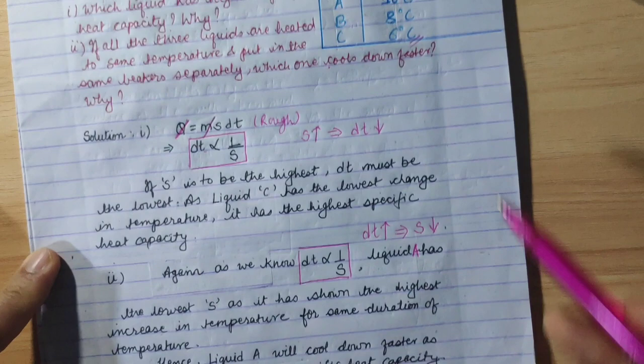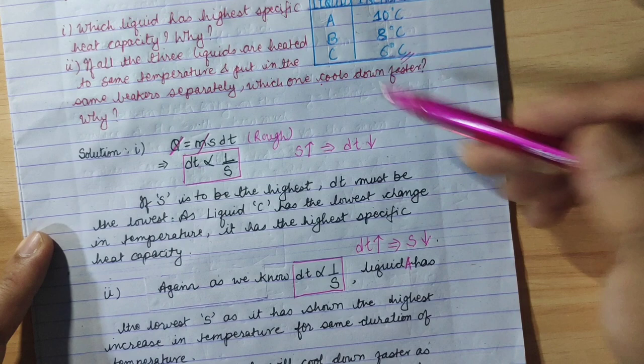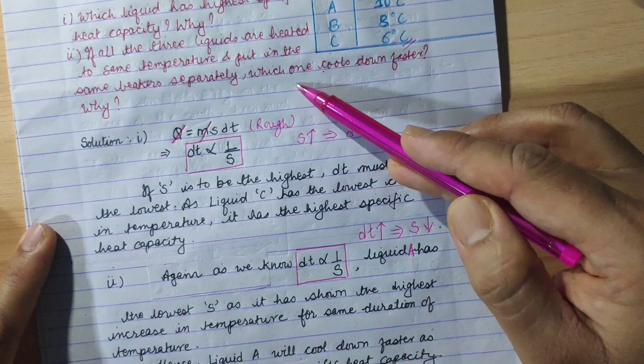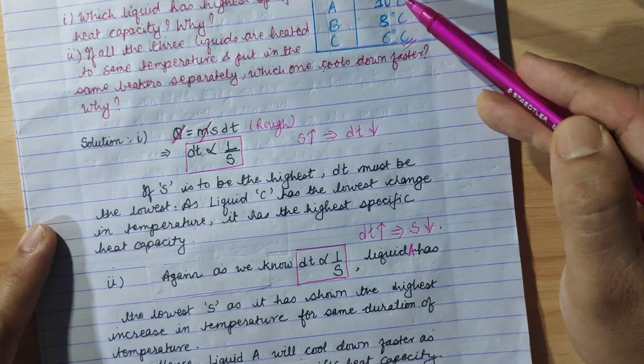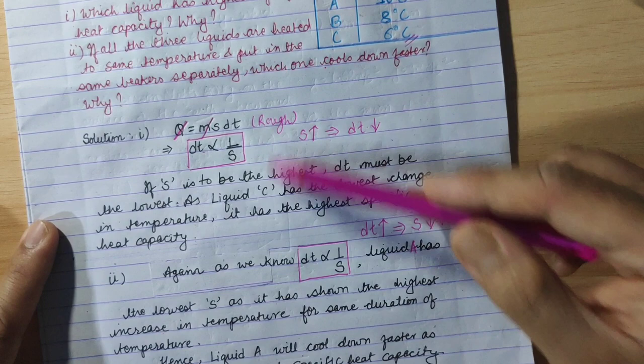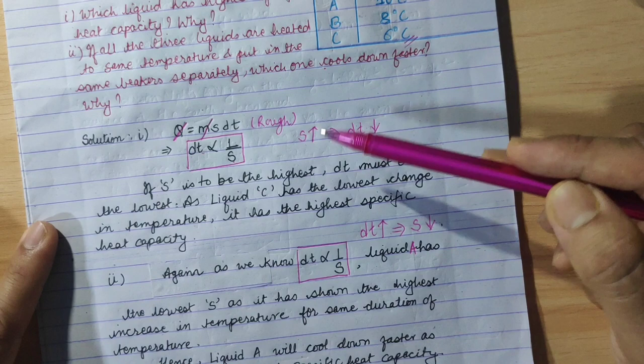To summarize: C has the highest specific heat capacity because it had the lowest temperature change when heated. In contrast, A has the highest temperature change, so lowest specific heat capacity. Therefore, when cooling from the same temperature, A will cool fastest. For both conditions, our mathematical relation is ∆T is inversely proportional to s. I hope you understood. If you have any questions, please comment below. Thank you.